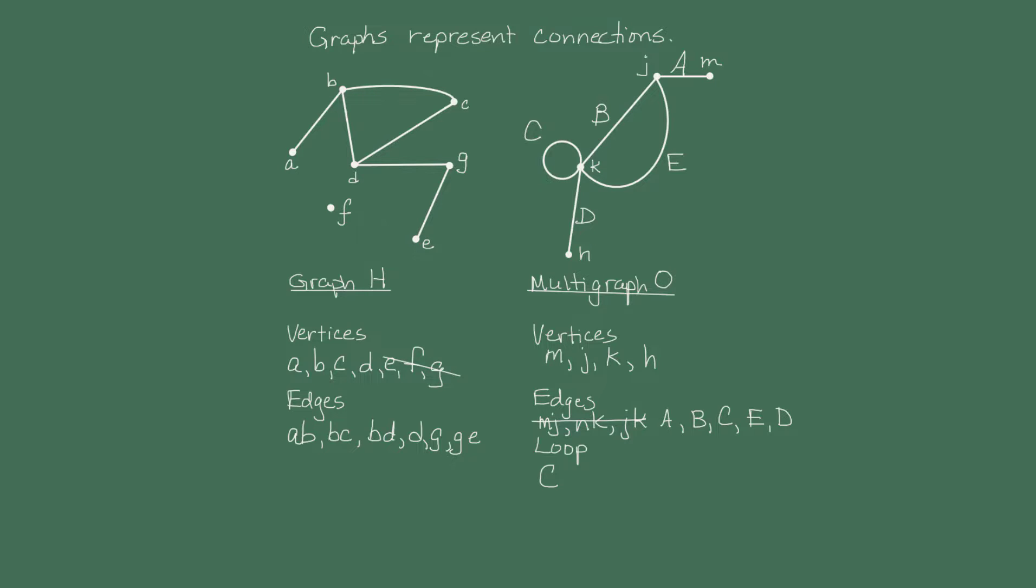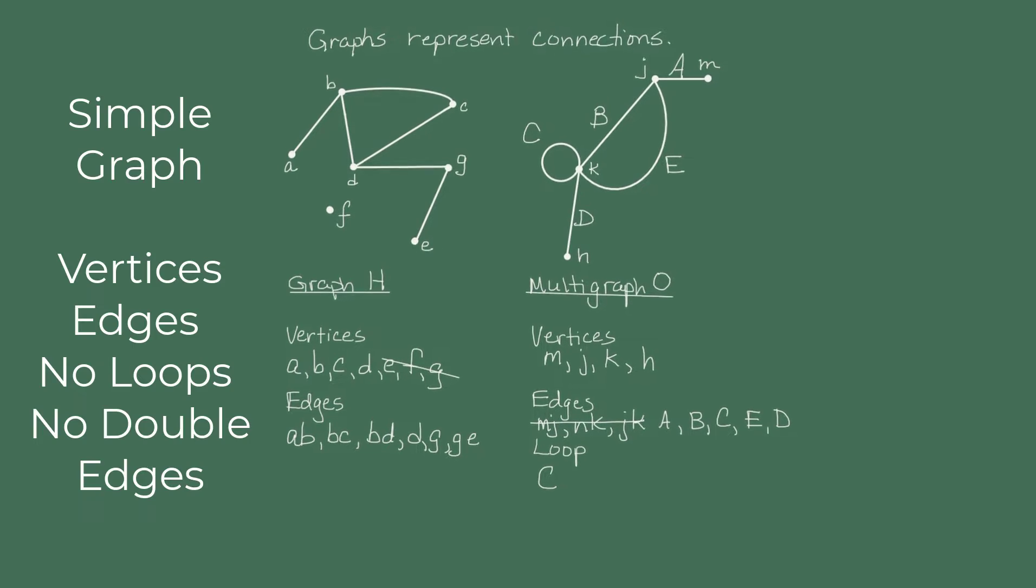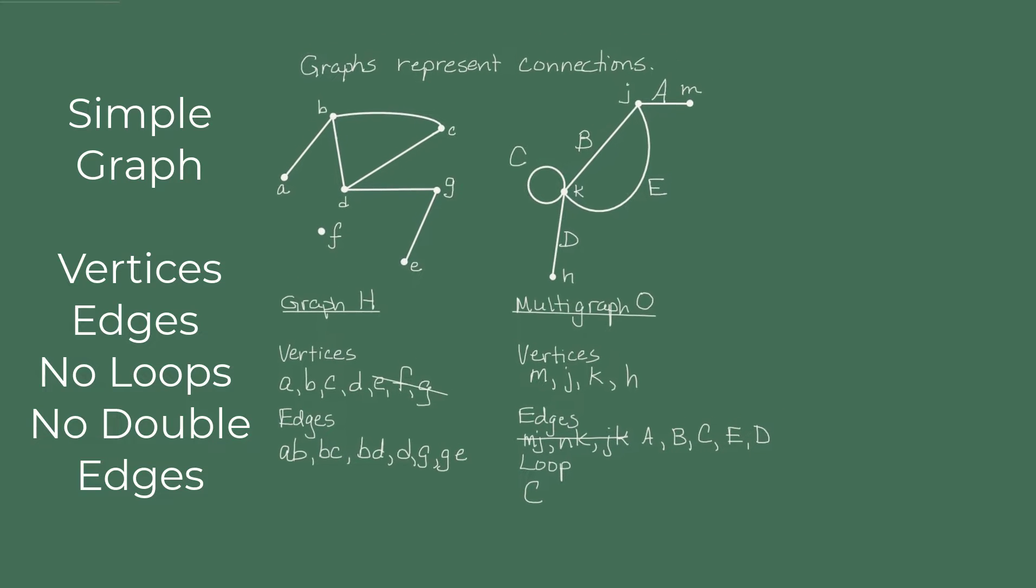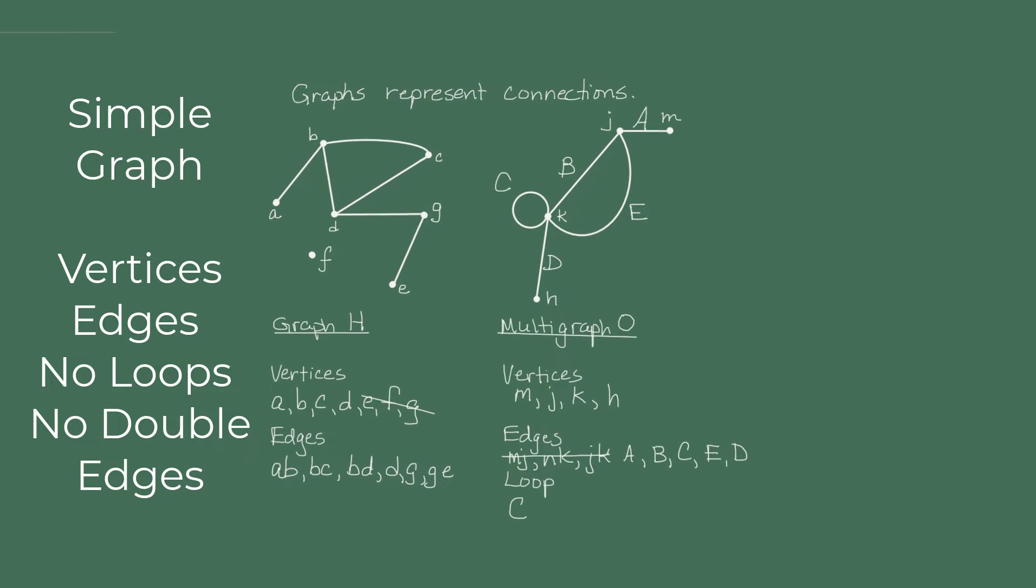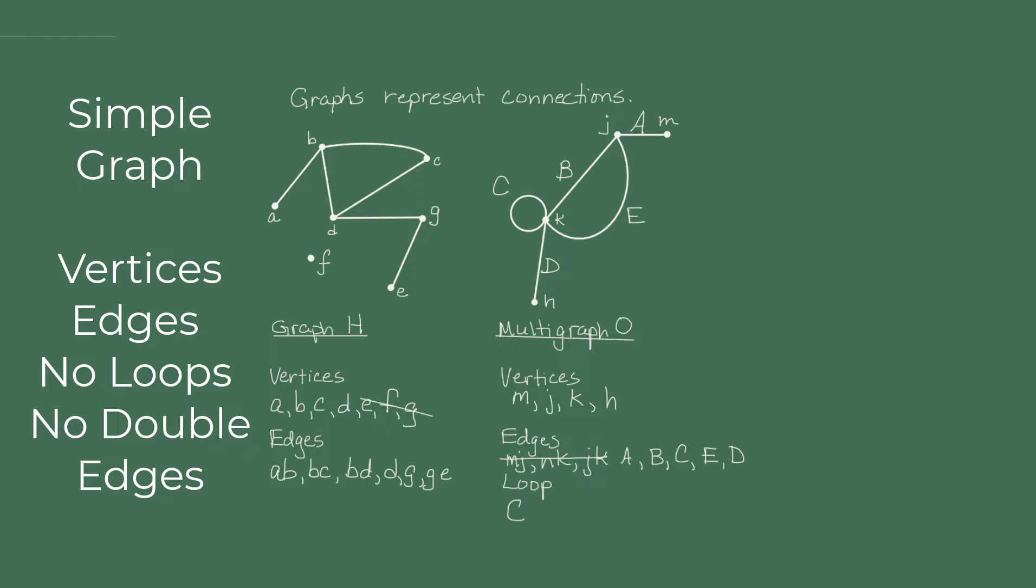To sum up, a simple graph is a collection of vertices and any edges that may connect them, such that every edge connects two vertices with no loops, and no two vertices are joined by more than one edge. But a multigraph is a graph in which there may be loops or pairs of vertices that are joined by more than one edge.